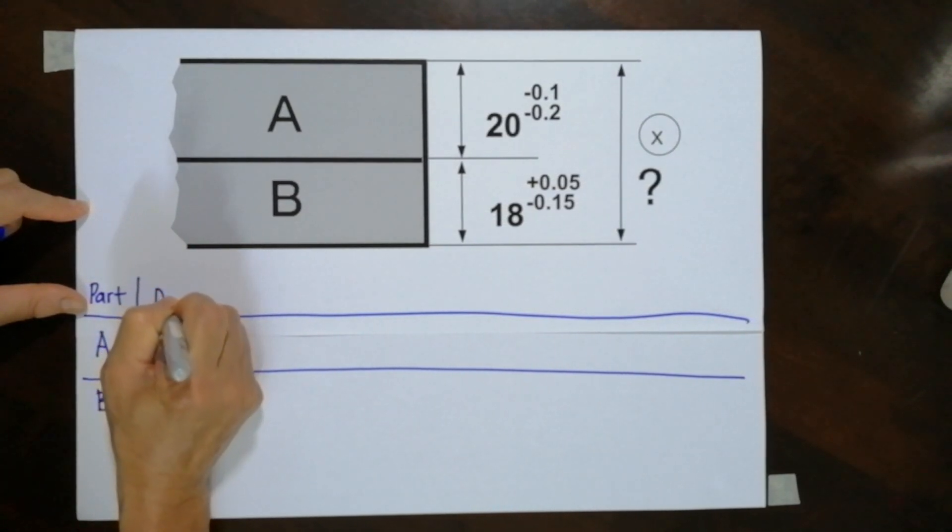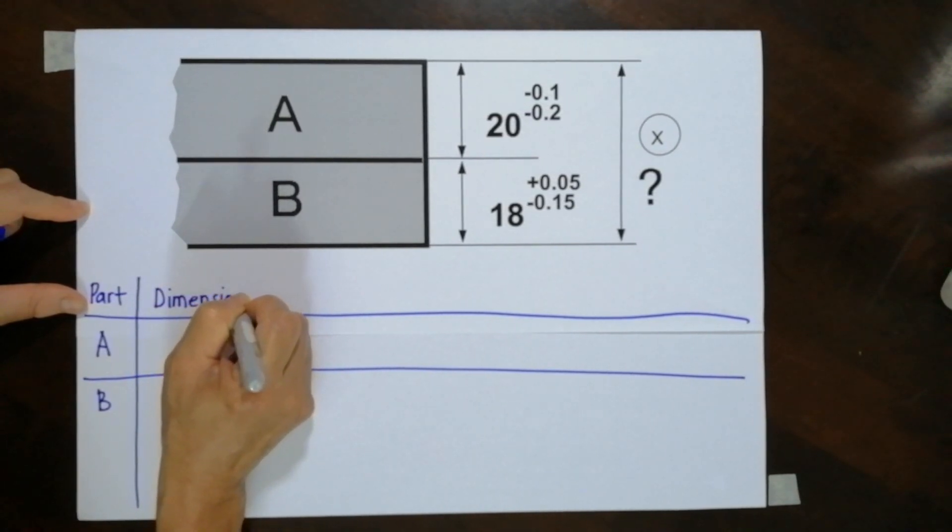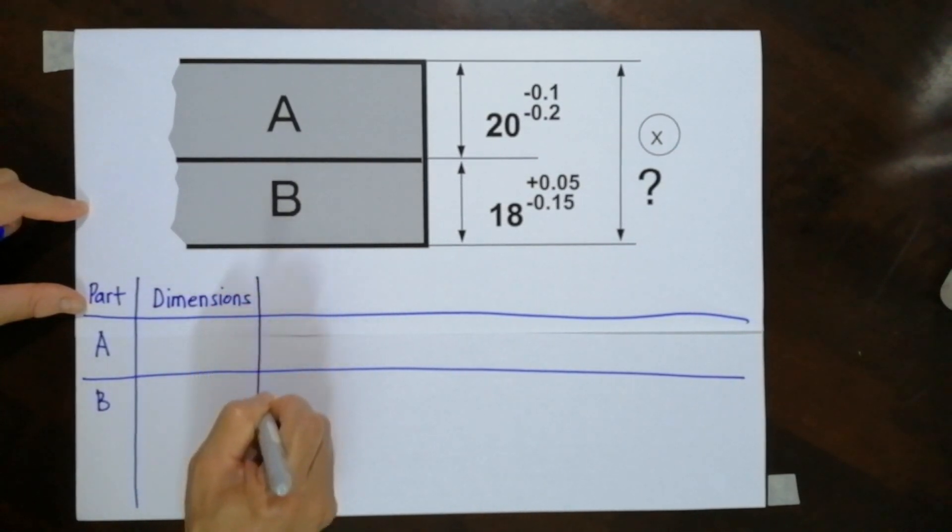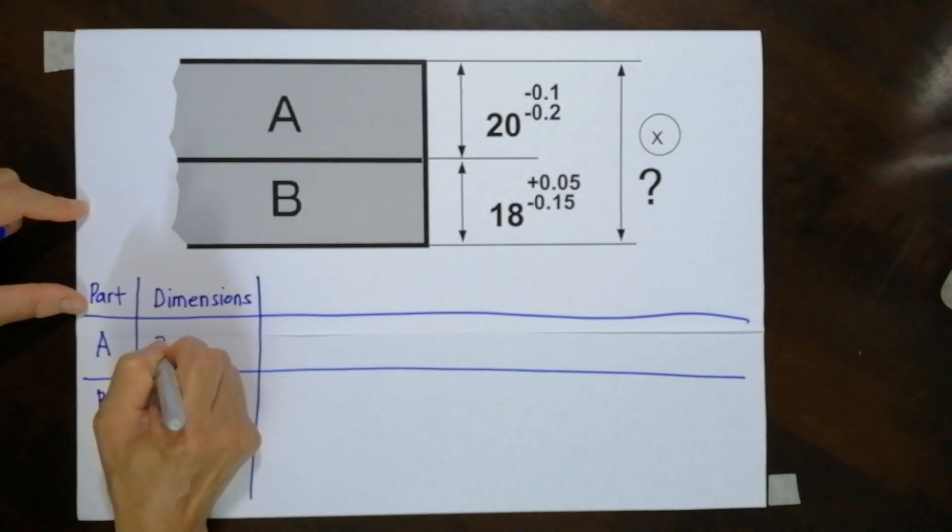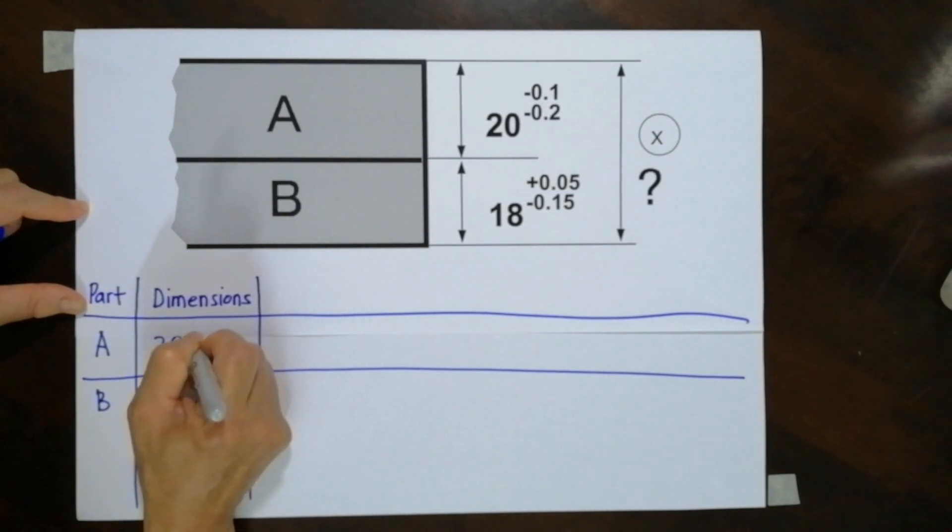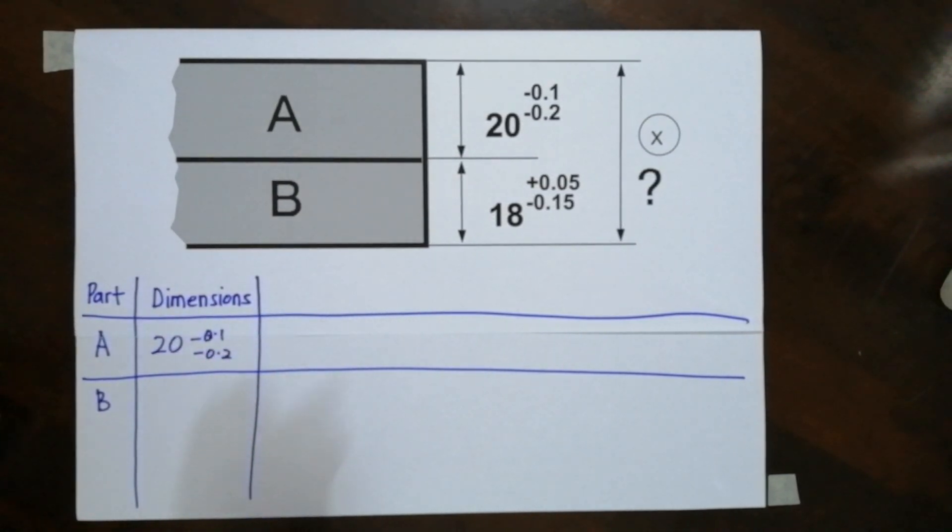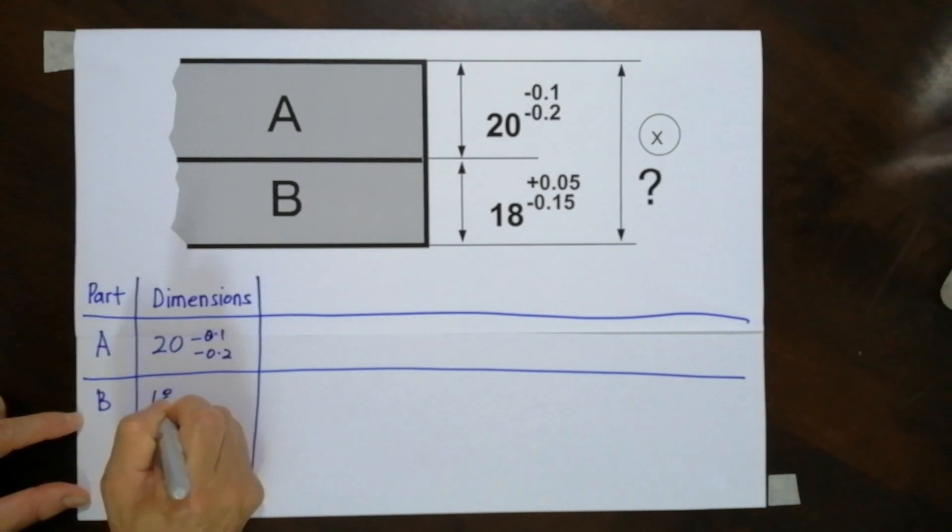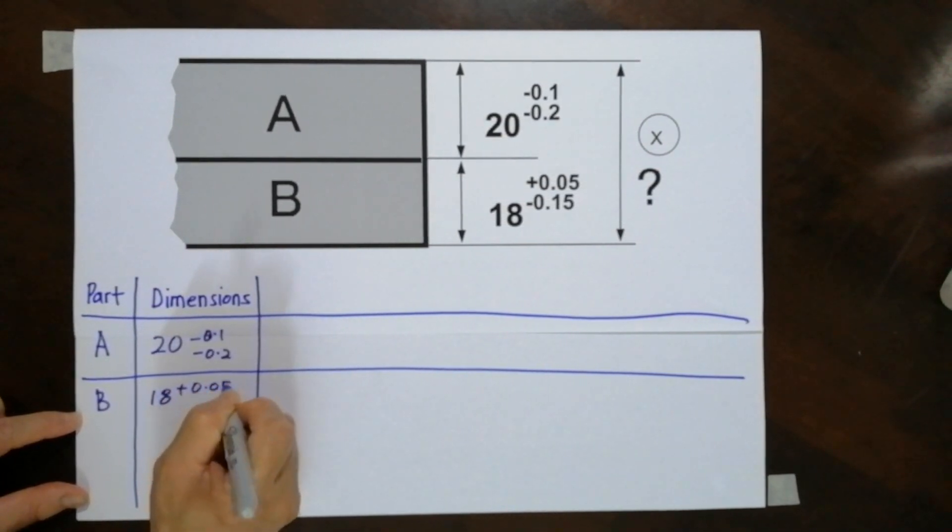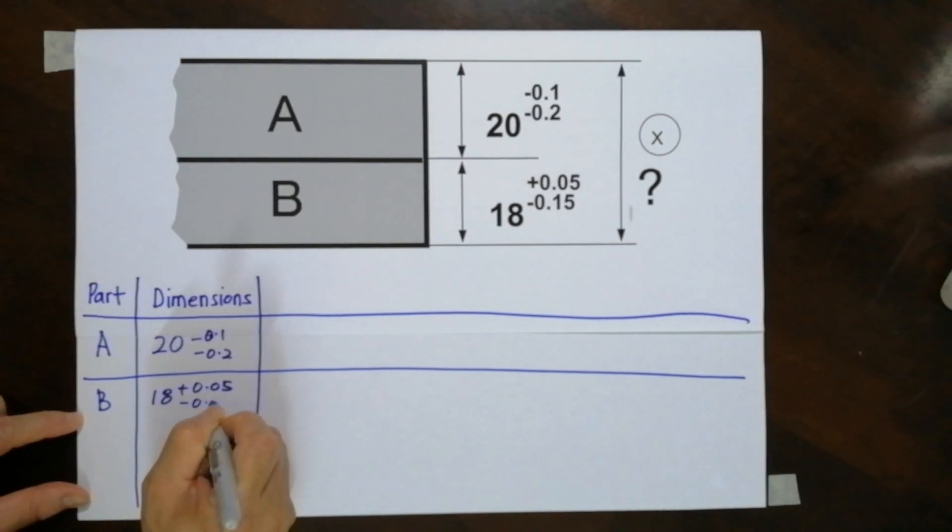And the dimensions. The dimensions involved, I'm already here. This will be 20 minus 0.1 minus 0.2. And this will be 18 plus 0.05 minus 0.15.